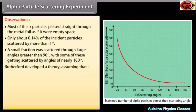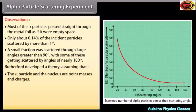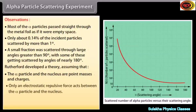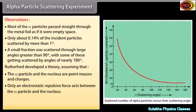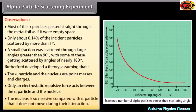Rutherford developed a theory assuming that the alpha particle and the nucleus are point masses and charges, only an electrostatic repulsive force acts between the alpha particle and the nucleus, and the nucleus is so massive compared with the alpha particle that it does not move during the interaction.